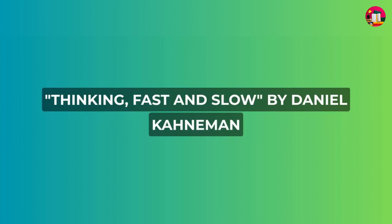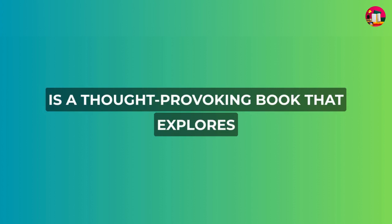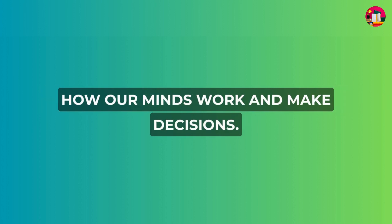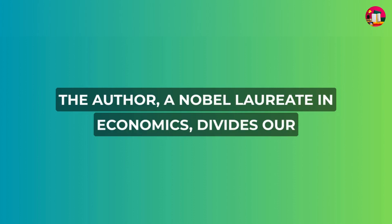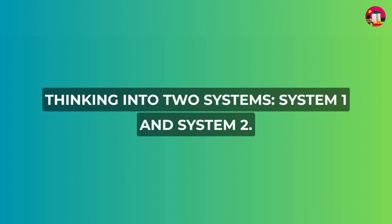Thinking Fast and Slow by Daniel Kahneman is a thought-provoking book that explores how our minds work and make decisions. The author, a Nobel laureate in economics, divides our thinking into two systems: System One and System Two.